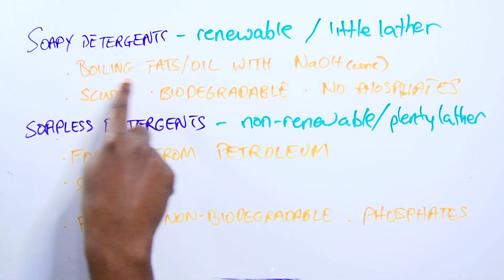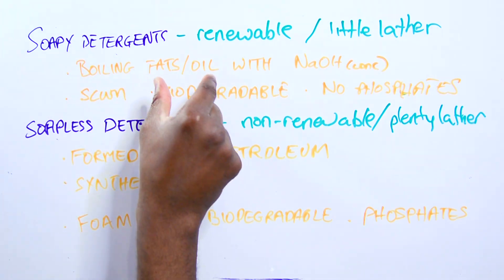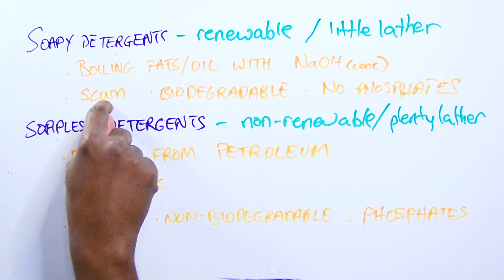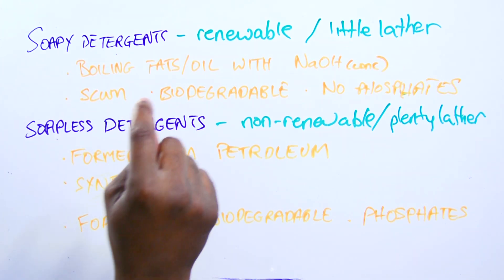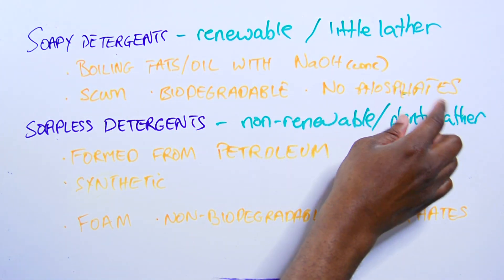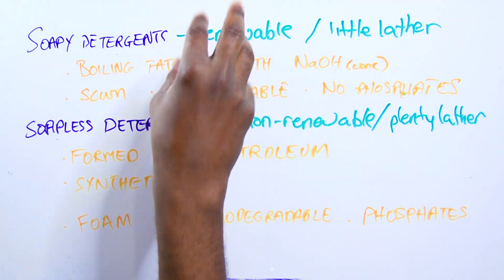We got these from saponification. Boiling the fats with sodium hydroxide. We can get scum from these if we have hard water. They are biodegradable. Breakdown by bacteria and stuff in the environment. And they contain no phosphates. So generally these will be looking better on the overall outlook.